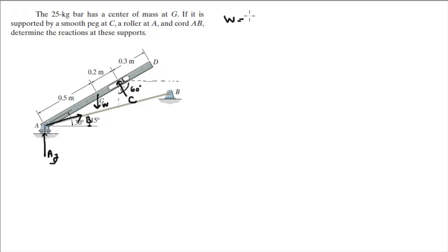W is equal to the weight, which is 25 kilograms, times the acceleration of gravity, which is 9.81 meters per second squared. So, that is 245.25 newtons. That's the weight. So, we got one of the forces.